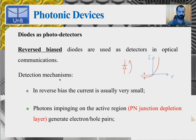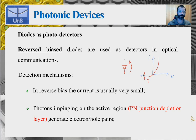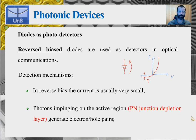What are the detection mechanisms? In reverse bias, the current is usually very small — we're talking about the saturation current, which is of the order of microamps or even less. What happens is that photons impinging on the active region, the PN junction depletion layer, will generate electron-hole pairs.